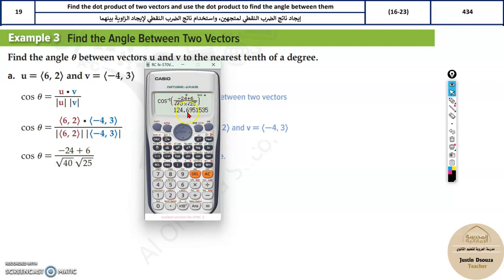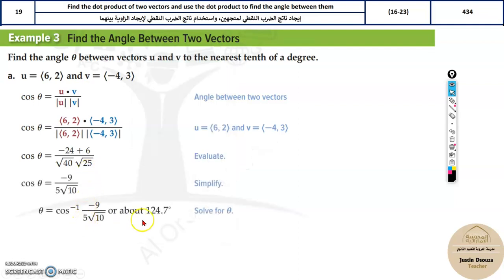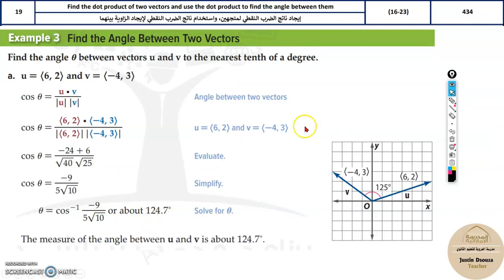You'll get the answer as 124.7 degrees. And that's the correct answer. So it is very easy. This is the answer. The theta is what you need to solve, so the angle between them.